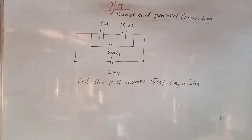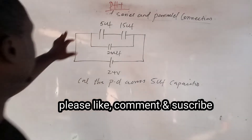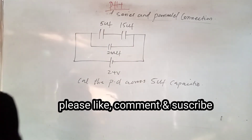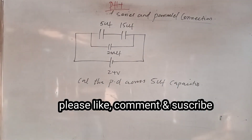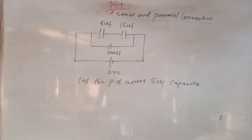If you are on this channel to learn, this is classwork for you. We have the circuit and I ask you to calculate the PD across the 5 microfarad capacitor. Remember, they have the same charge but different potential difference. Solve it and drop the answer in the comment section. Please like and subscribe. Thank you very much.